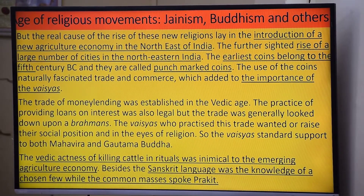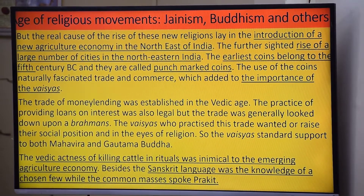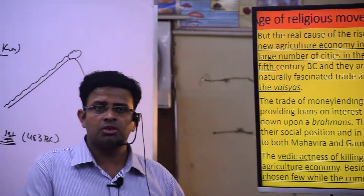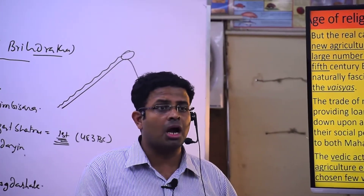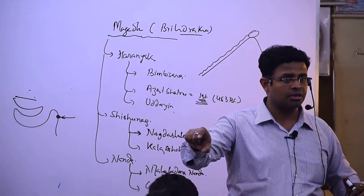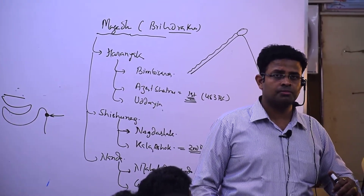Vaishyas extended support to both Mahavira and Gautam Buddha. The Vedic practice of killing cattle in rituals was also considered harmful to the emerging agricultural economy — animals were needed in agriculture, so there was no justification for killing them. This further reinforced support for the new religions.